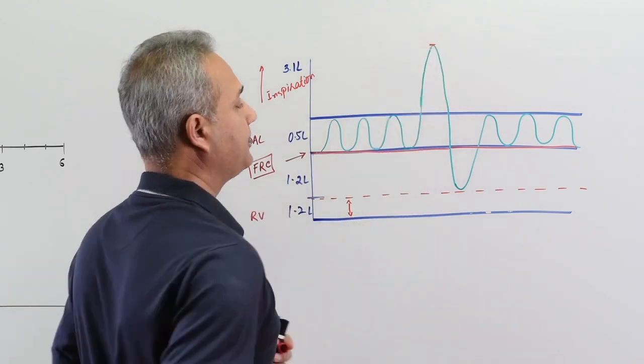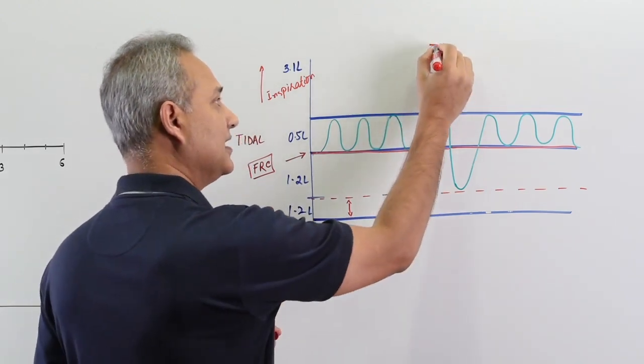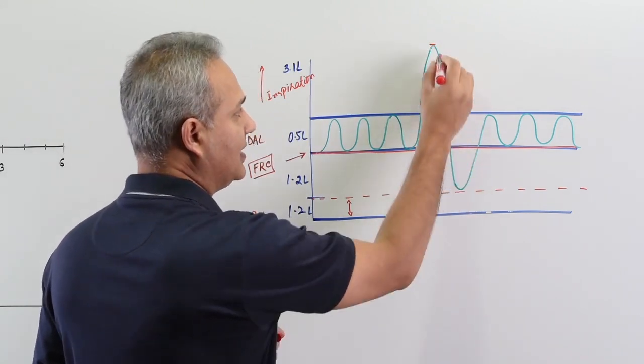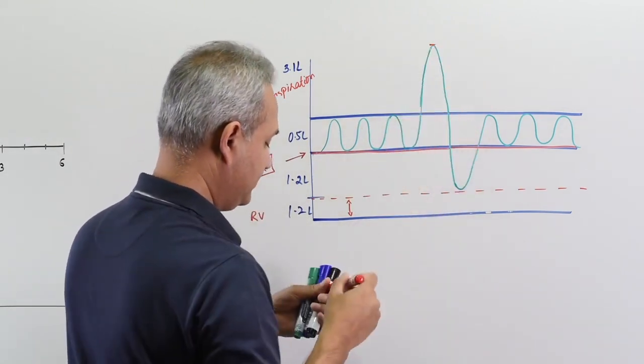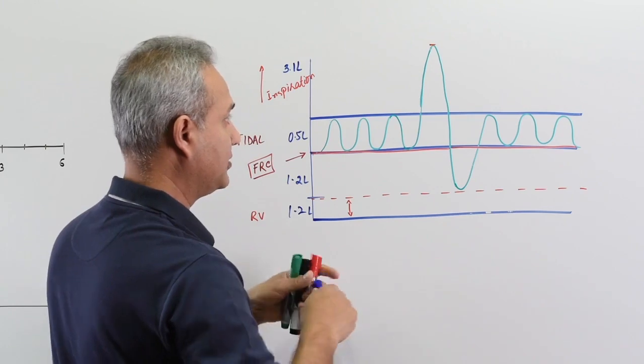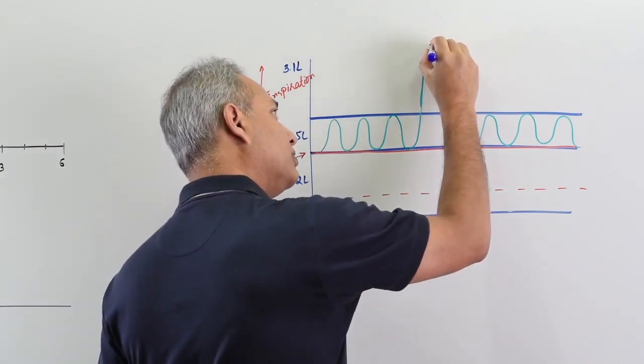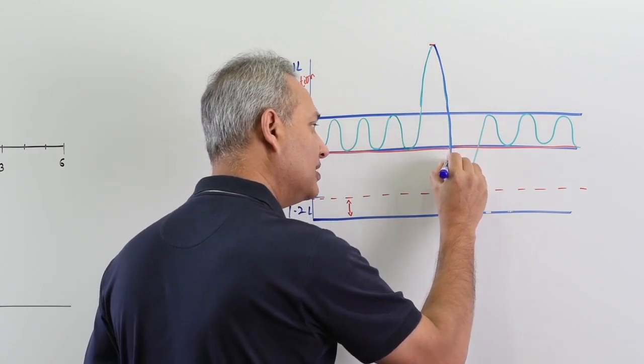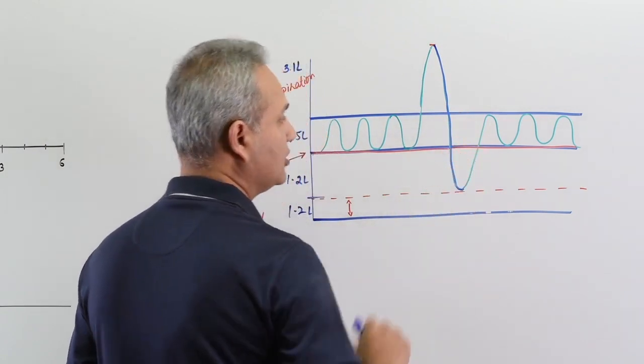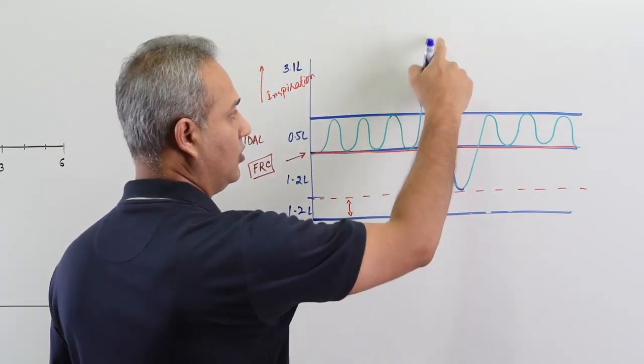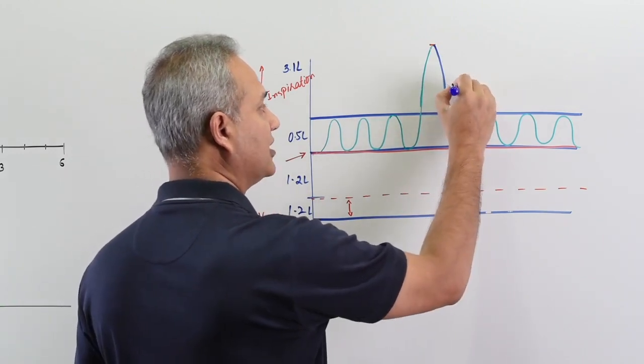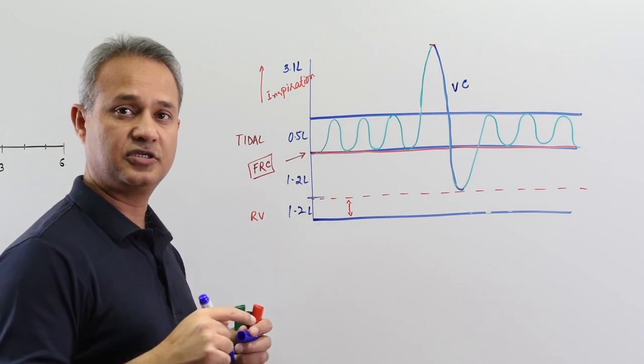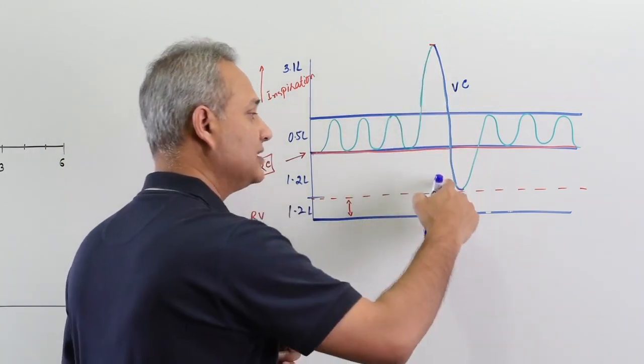That is, if I take a normal breath in quietly and then continue to inspire further with forceful inspiration, then I reach here. And then as I start exhaling, if I keep going, then this whole slope which I will make in blue here - this whole slope which has the inspiratory reserve volume, then the tidal volume, then the expiratory reserve volume - this whole slope is called vital capacity.